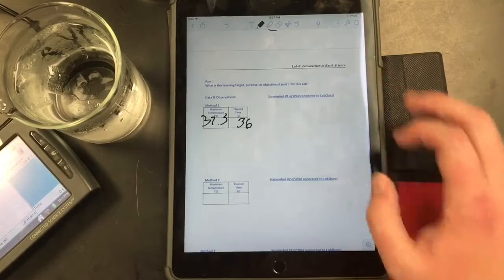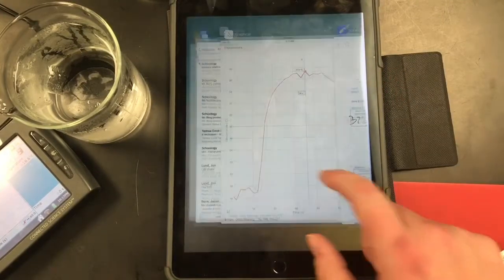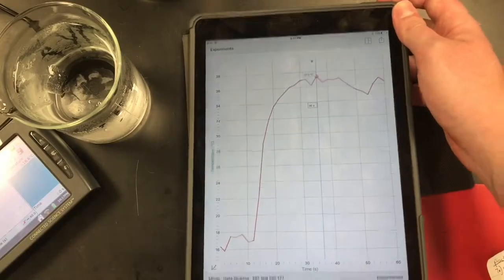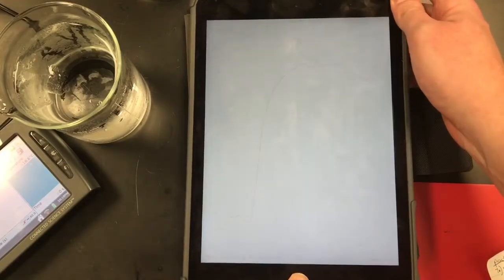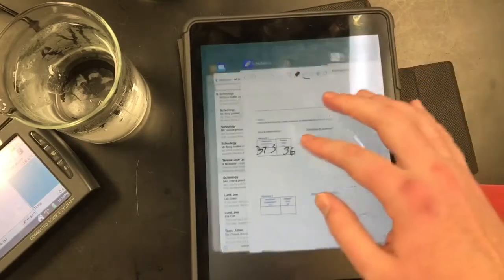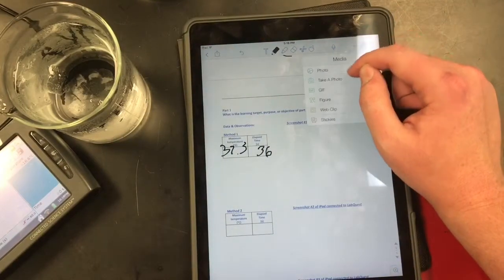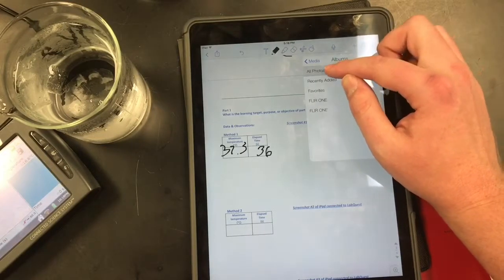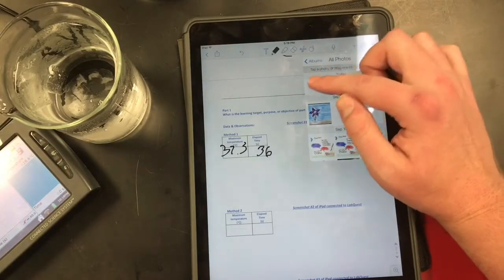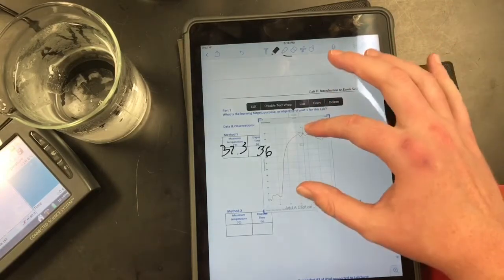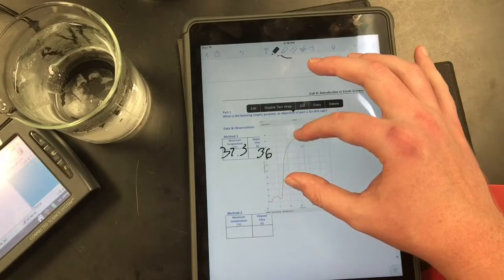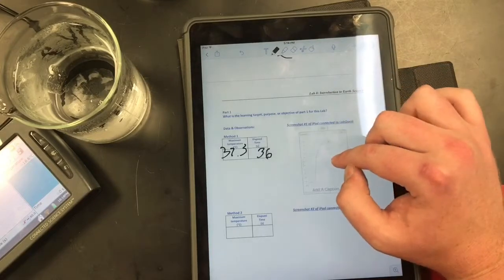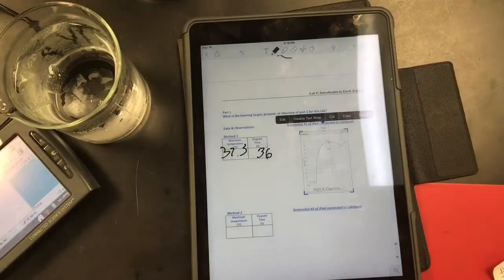I'll go back in here and write in 37.3 degrees and it happened at 36 seconds. I'm going to ask you to take a screenshot of each of these graphs. So the first one, I'll take a screenshot using the power down and the home button simultaneously. And then in Notability, you can actually just go in, add a photo, all photos, this one right here, and you can shrink that down, put it right there. So that's what you do for method one.